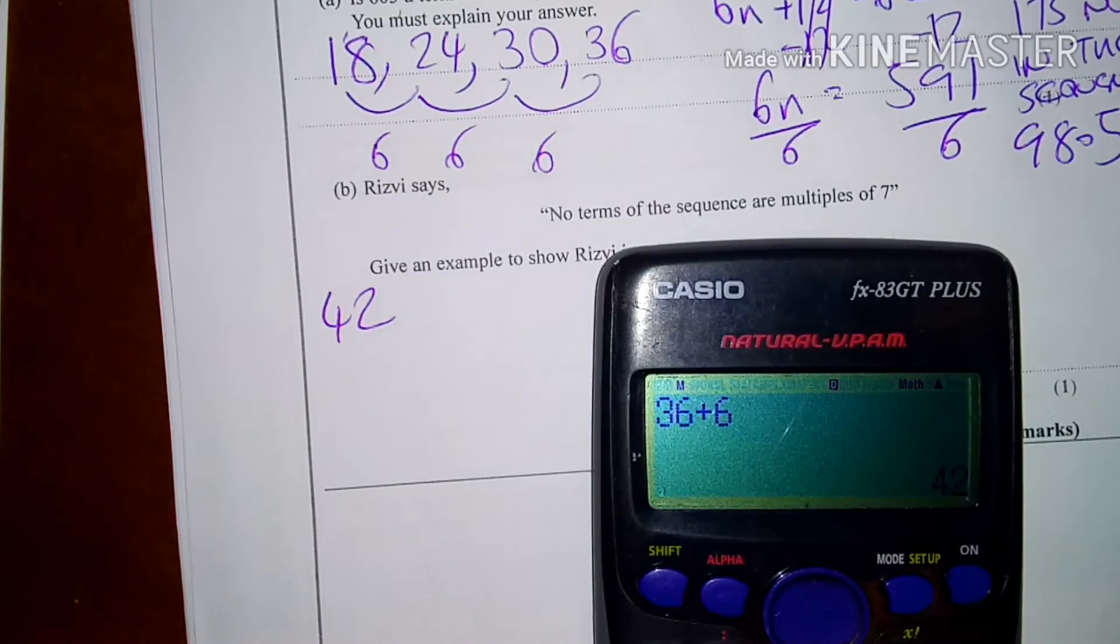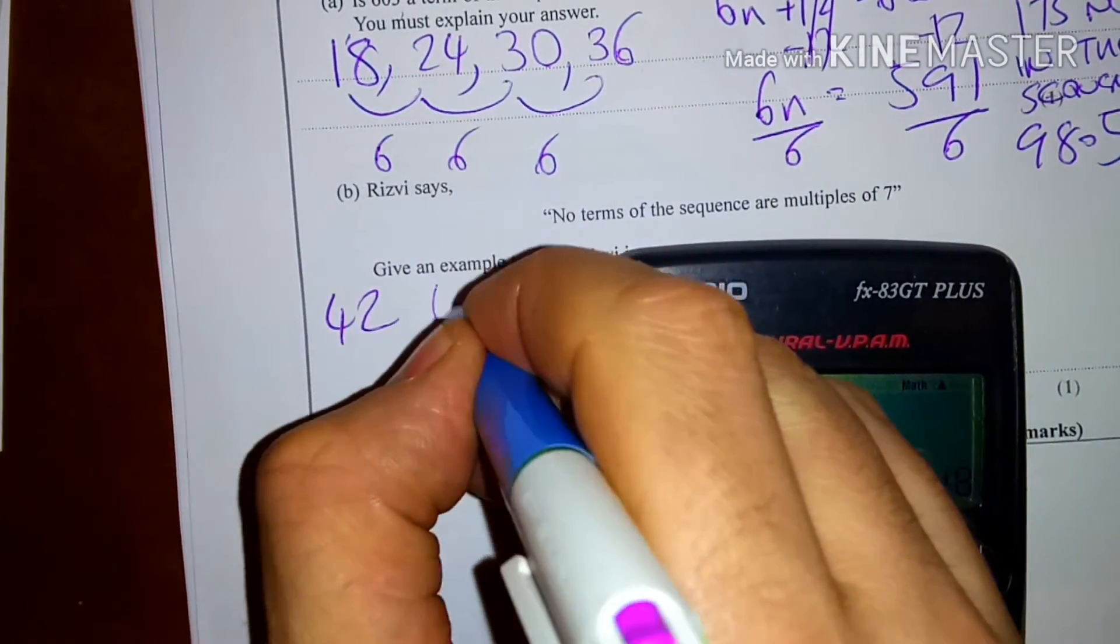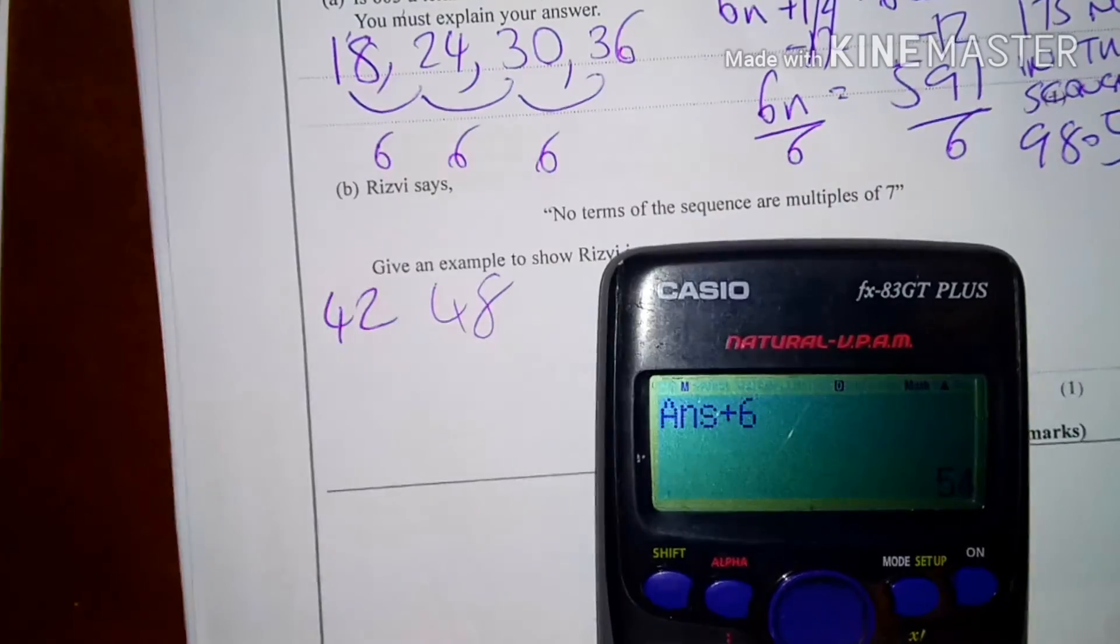And then ask yourself, is that in the sequence? Then add 6 again. 48. Add 6 again. 54.